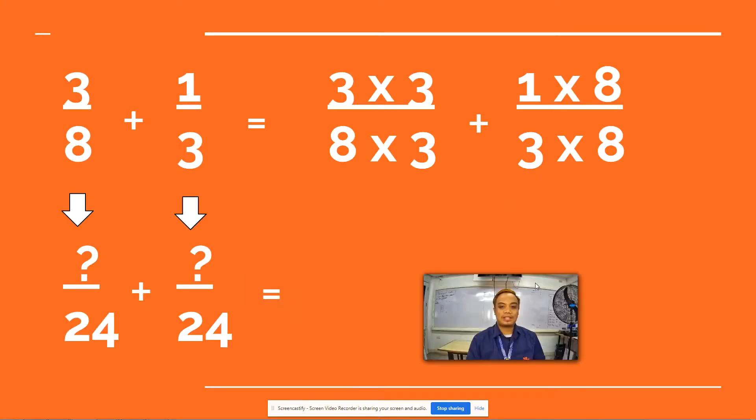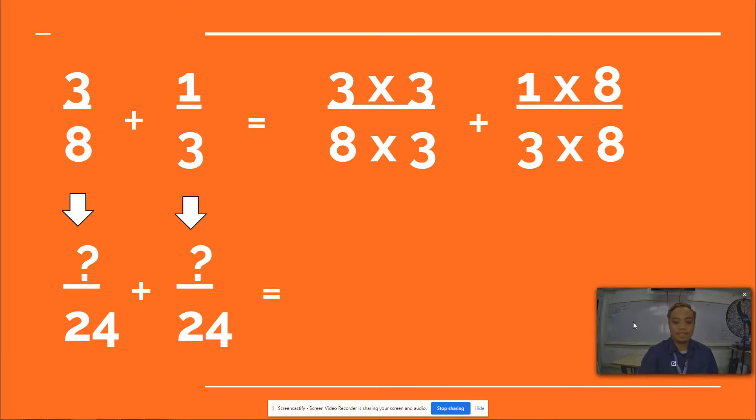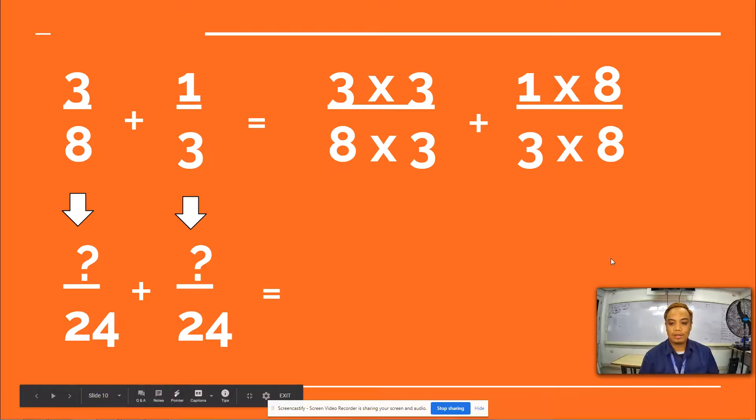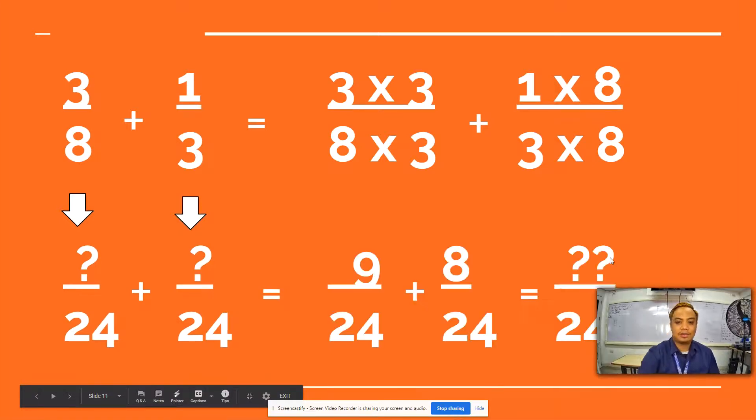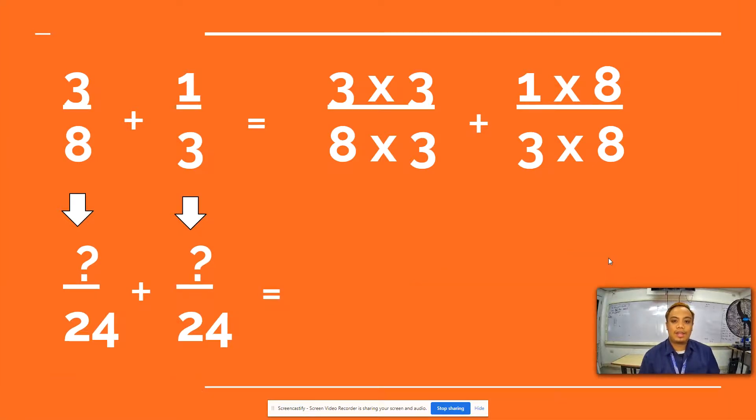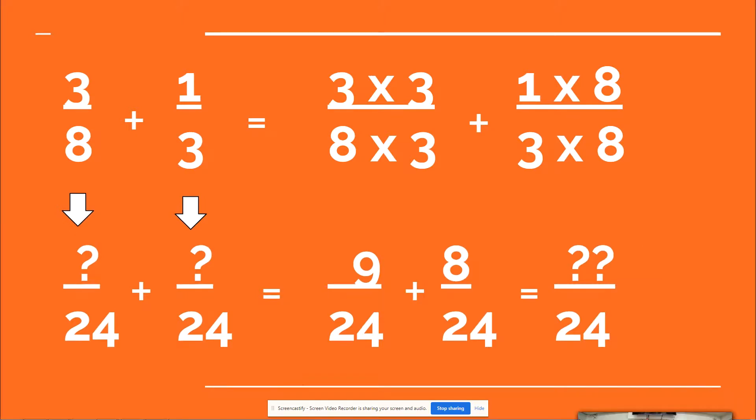What we will do next is multiply these numbers. So 3 times 3 and 8 times 3. 1 times 8 and 3 times 8, to get a denominator of 24. So from 3/8, it will become 9 and 24. From 1/3, it will become 8 and 24.